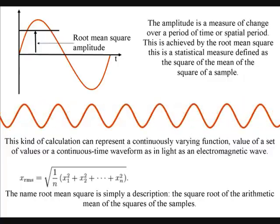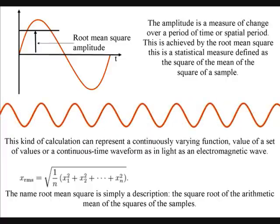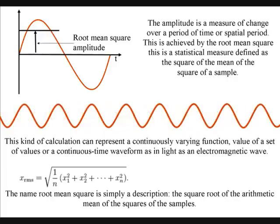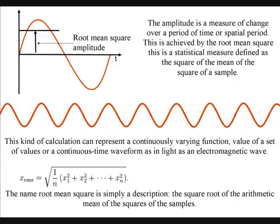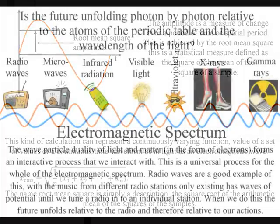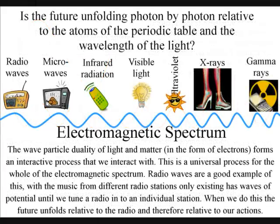The name root mean square is simply a description, the square root of the arithmetic mean of the squares of the samples. This kind of calculation can represent a continuously varying function, value of a set of values or a continuous time waveform as in light as an electromagnetic wave.